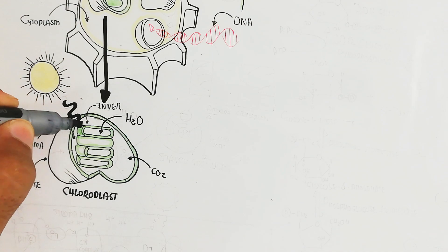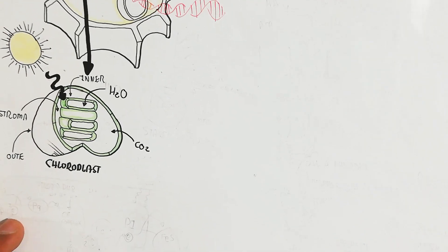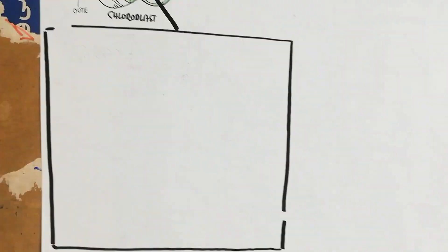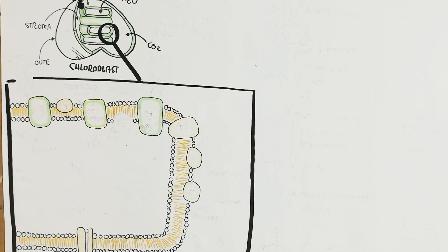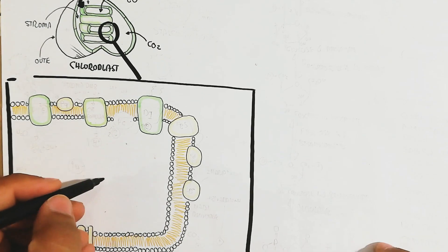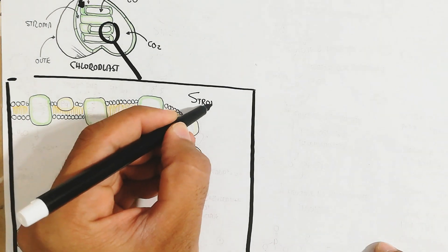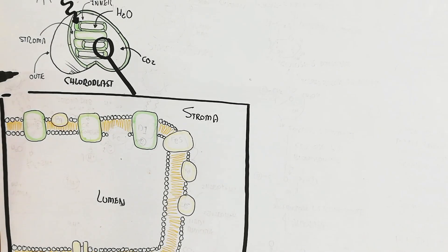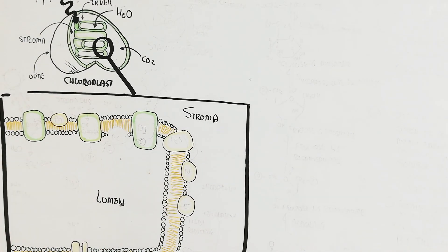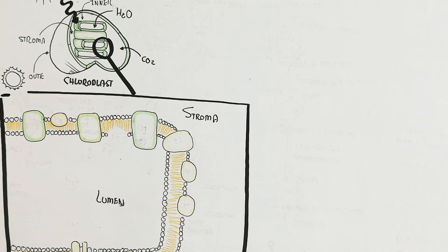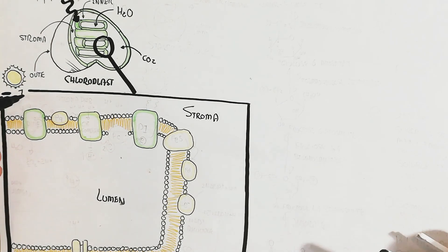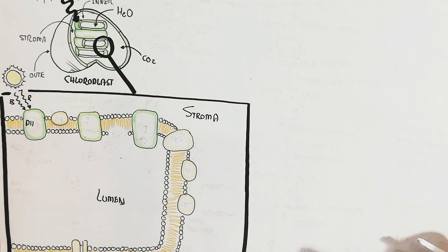Carbon dioxide and water are used to produce glucose. This is the bigger picture of the thylakoid membrane, which contains a lot of complexity. Inside is the lumen and outside is the stroma, where the Calvin cycle will occur. The light reaction occurs at the thylakoid membrane, while the Calvin cycle is the dark reaction.